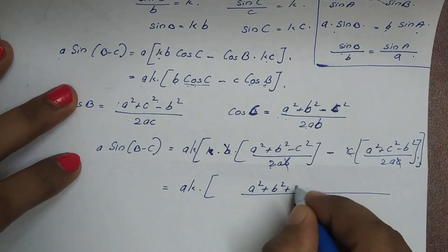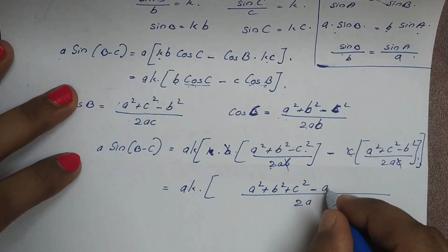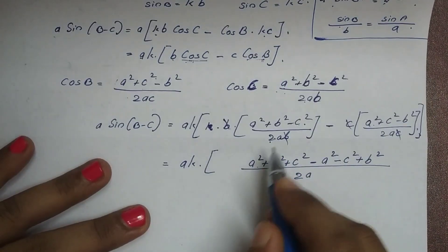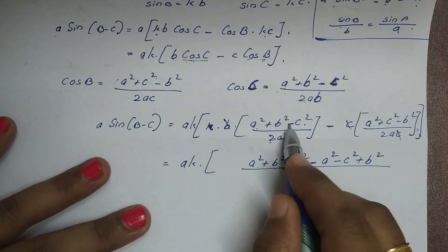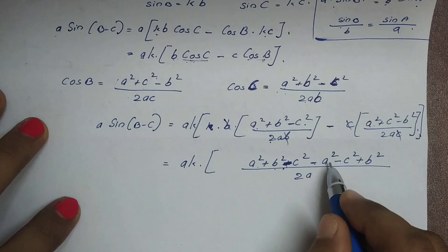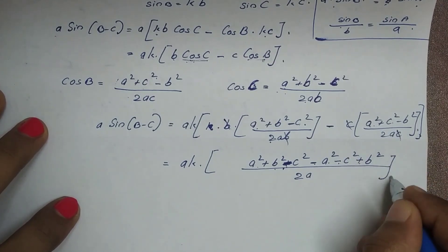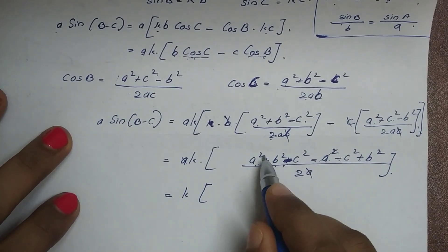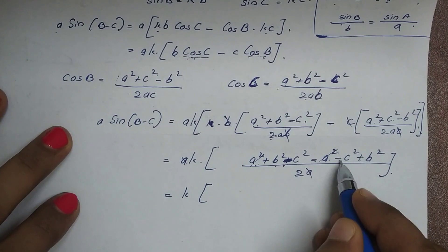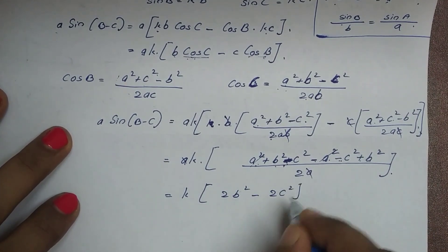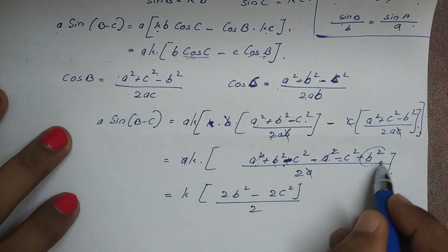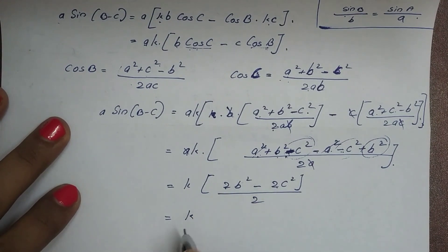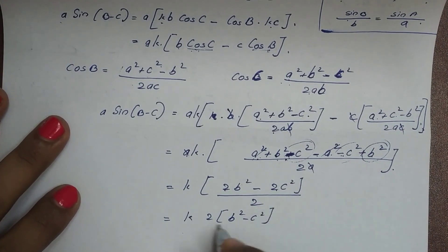The numerator becomes: (a² + b² − c²) minus (a² + c² − b²), which equals a² + b² − c² − a² − c² + b², giving 2b² − 2c². Dividing by 2 gives b² − c². So sin(B−C) = k(b² − c²) / a.